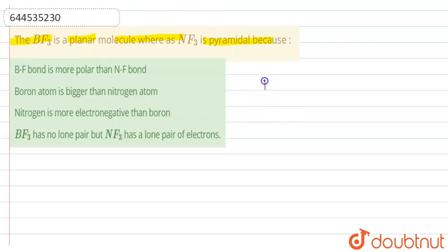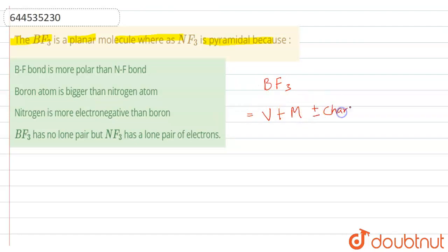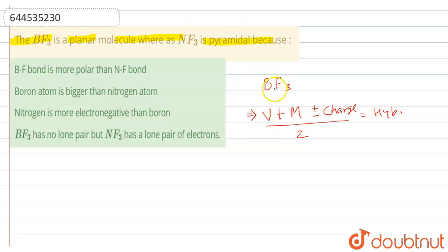We have BF3, so let's find out the hybridization first. The formula for hybridization is: valency of central atom plus number of monovalent atoms, plus or minus charge on it, divided by 2. This is our hybridization formula.